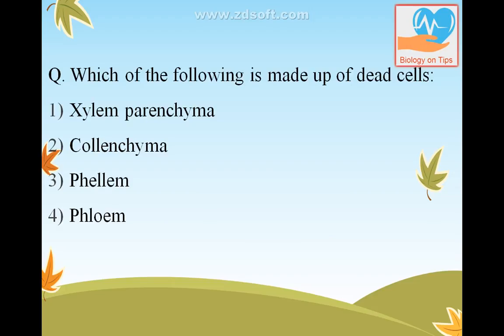Which of the following is made up of dead cells? As you all know, xylem is a dead tissue but xylem parenchyma is living. So the answer will be phloem, which is a part of bark.